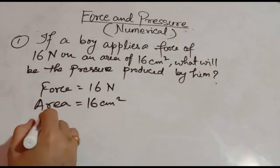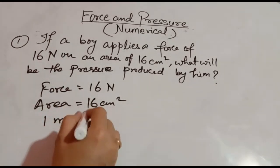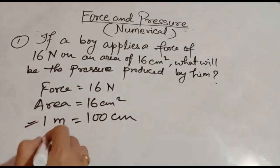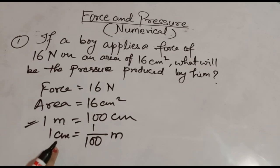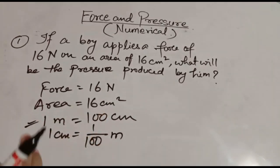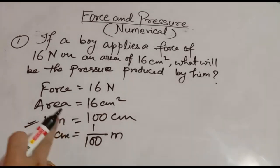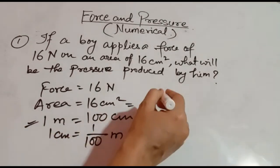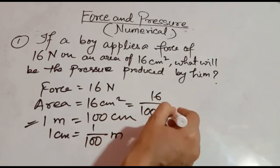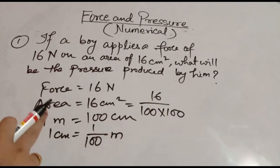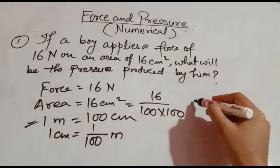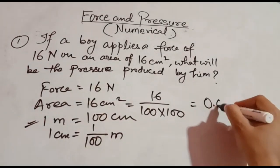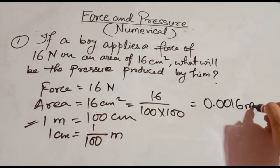How can you change it? 1 meter is equal to 100 centimeter, which means 1 centimeter is equal to 1 by 100 meter. In area, the centimeter is in square form — centimeter into centimeter. So change the area: 16 divided by 100 into 100. Like this, you can change centimeter square to meter square. Put the decimal value — it will be 0.0016 meter square.